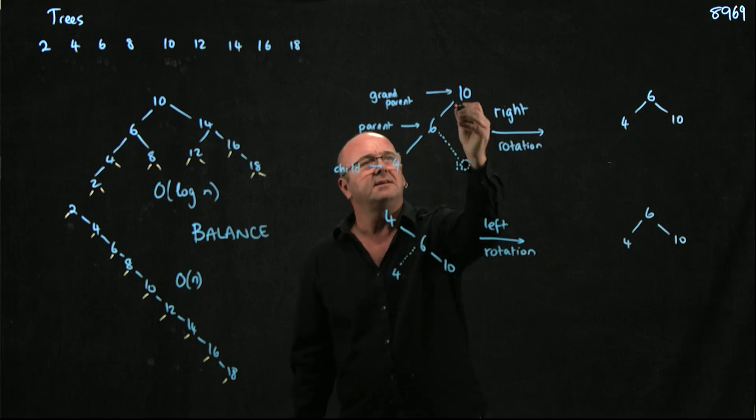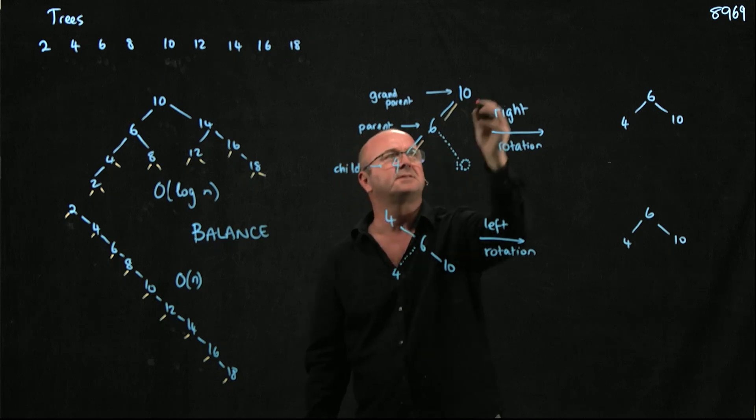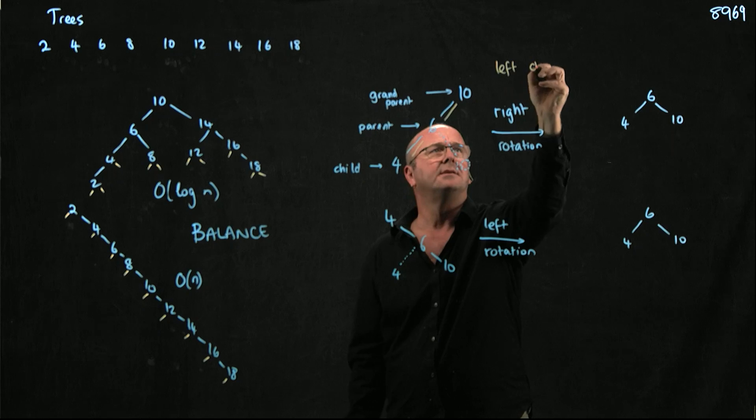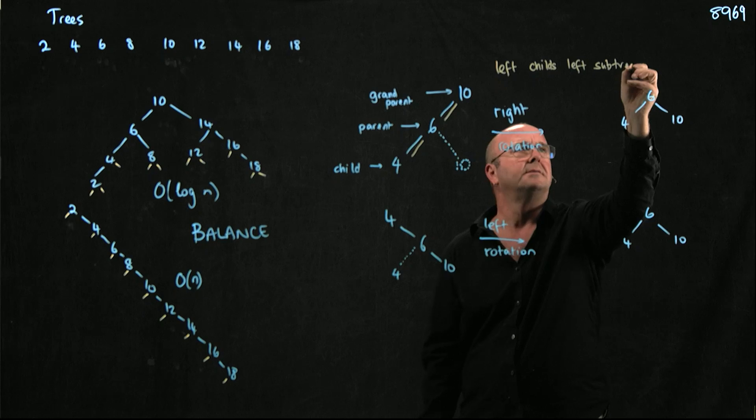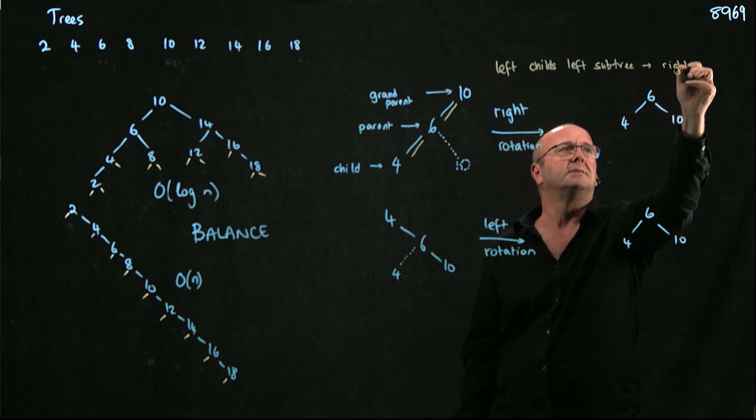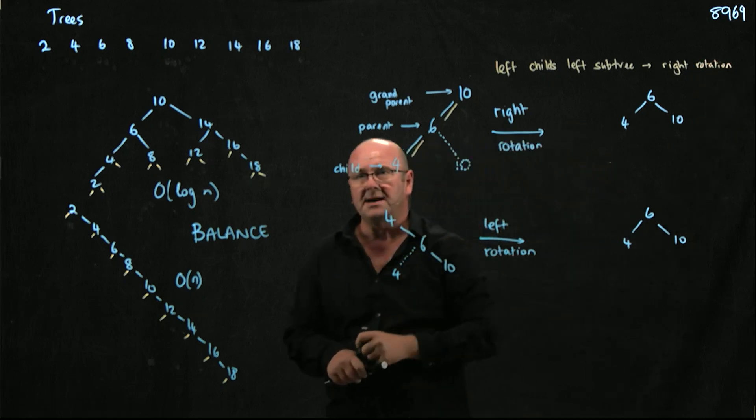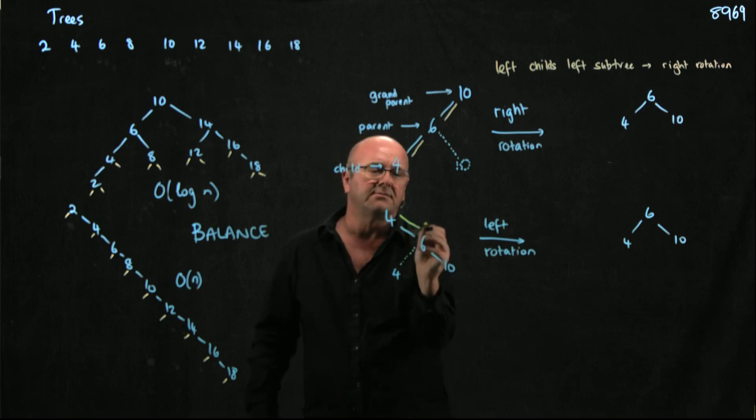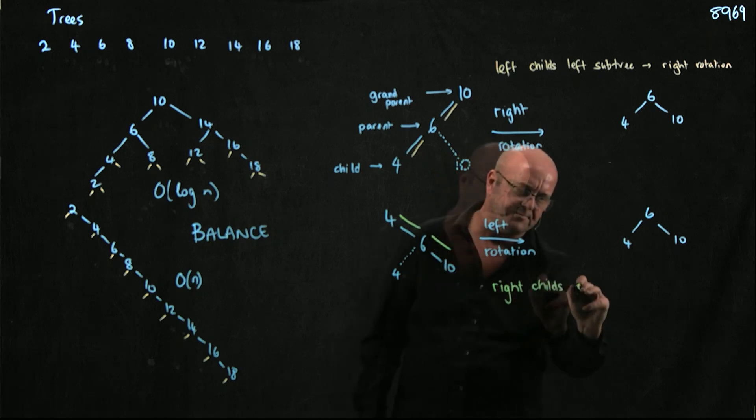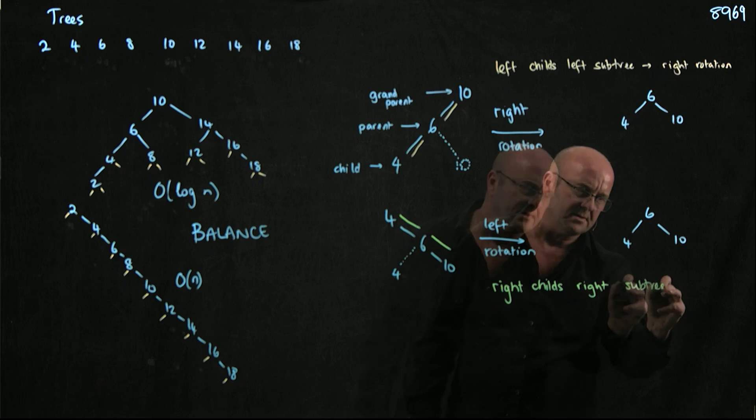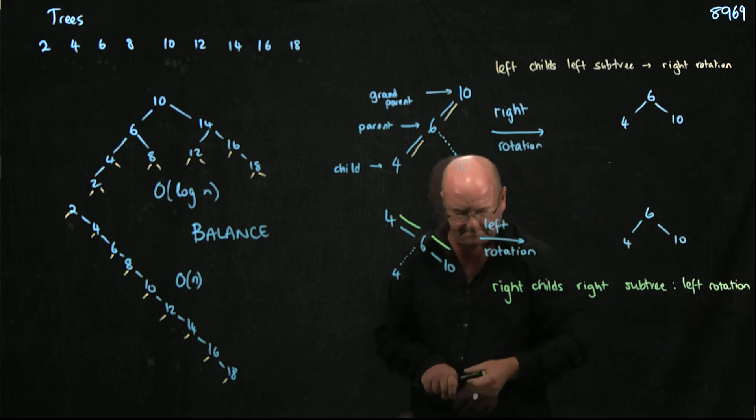If the imbalance is in the left child's left subtree, then we do a right rotation. If the imbalance is in the right child's right subtree, then we do a left rotation.